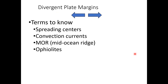Some terms to know when talking about divergent plate boundaries are: spreading centers, convection currents, mid-ocean ridges or MORs, and ophiolites — a particular type of rock sequence.